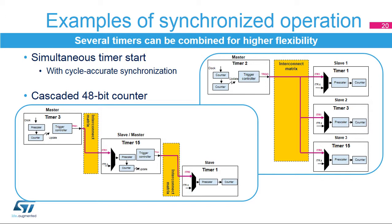This slide gives two examples of synchronized operation. The first example shows how four timers can be simultaneously started. A mechanism allows the master timer to start slightly delayed to compensate for the master-slave link delay and have all timers synchronized with cycle accuracy. By combining the channels of timers 2, 1, 3, and 15, it is possible to have up to 16 synchronized PWM channels. The second example shows how to create a 48-bit timer by cascading three timers. The update event generated on counter rollover is used as the input clock for the following slave timer, so that timer 3's counter holds the least significant 16 bits, timer 15's counter holds bits 16 to 31, and timer 1's counter holds the upper bits from bit 32 to bit 47.